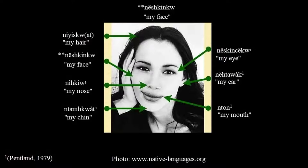We have my hair: nīsq, or alternately nīsqot. Then my face: nīshkīnq. Then nīhkīu, my nose. Then ntāmpkwot, my chin. Nīsqīnqaq, my eye. Nīhkīnqaq, my ear. Ntāpkwot, my mouth — alternately you may also hear it pronounced ntun, with more of a U sound.